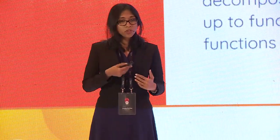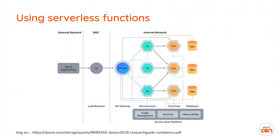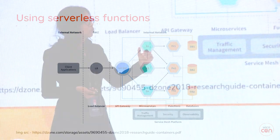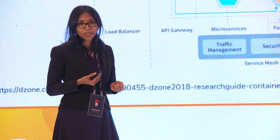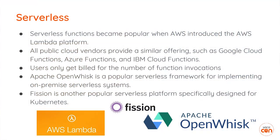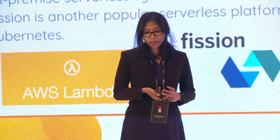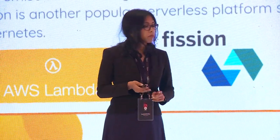Serverless functions became popular when AWS introduced AWS Lambda. All public cloud vendors provide similar offerings: Google Cloud Functions, Azure Functions, and IBM Cloud Functions. Users are only billed for the number of functions they invoke. Apache OpenWhisk and Fission are also other serverless implementations.